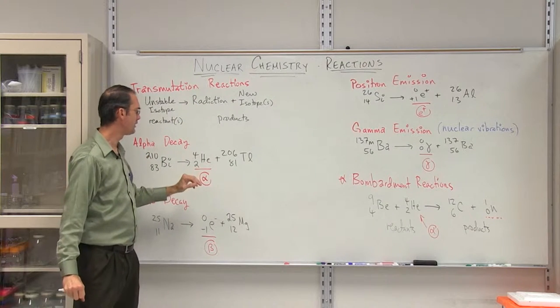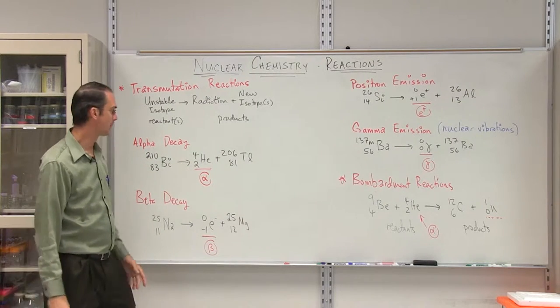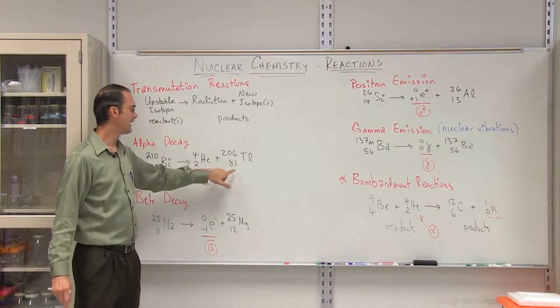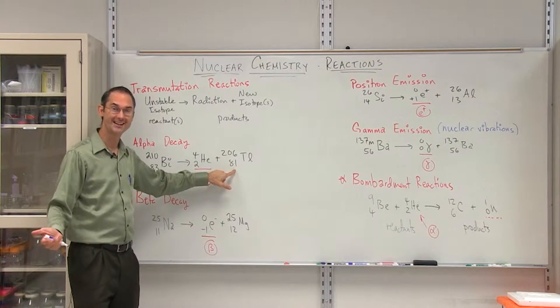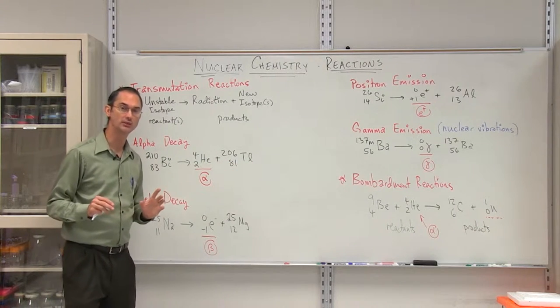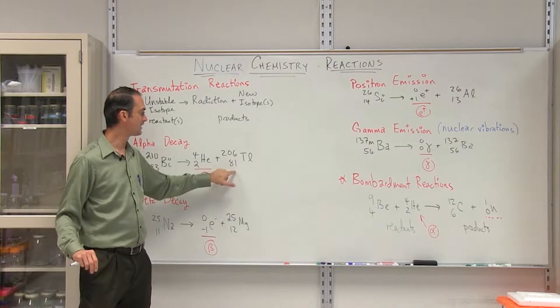An alpha particle will come out, and then you also get some other new isotope. Well, what new isotope is it going to be? It's rather easy to find out. You take the 83, you subtract two, you get 81. You look at the periodic table, and you see that that's going to be thallium. The first thing to do is to conserve the atomic number. That way you know the number and the letter, the type of element that you're going to be getting.